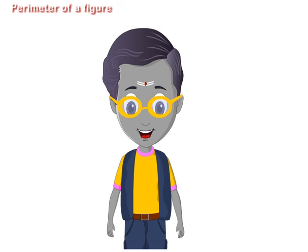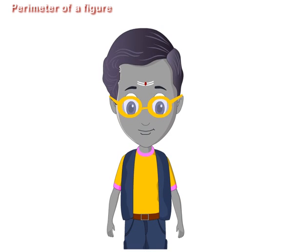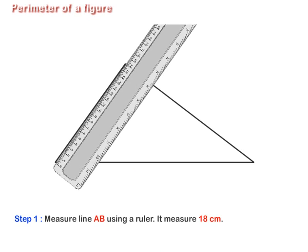Friends, let us now understand what is meant by perimeter of a figure. Step 1: Measure line AB using a ruler. It measures 18 cm.